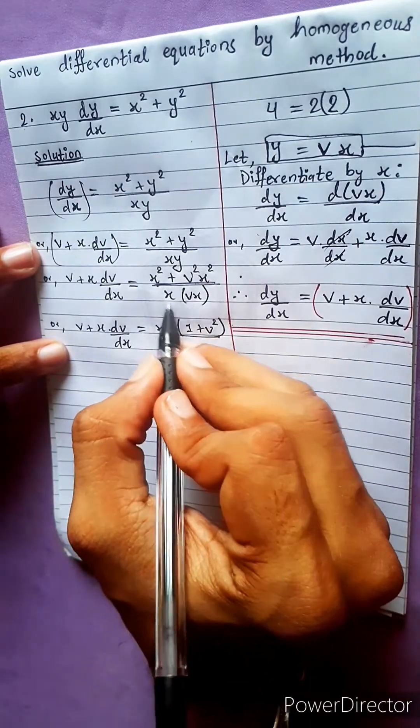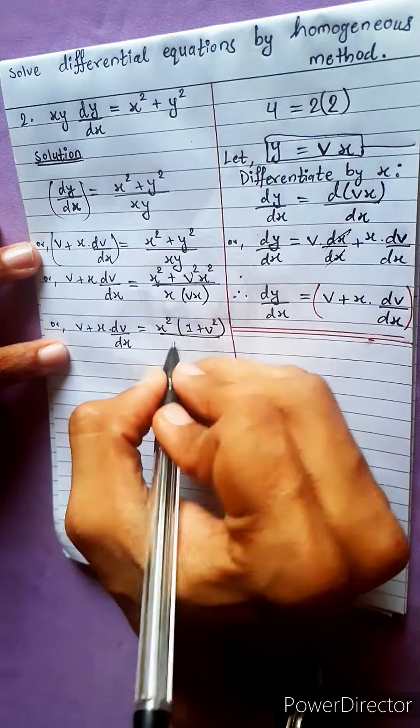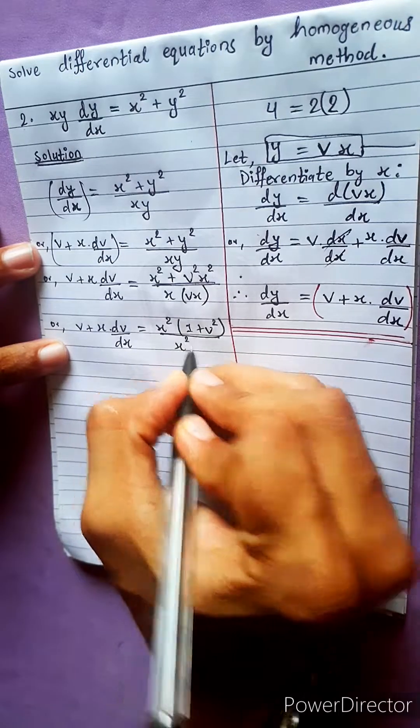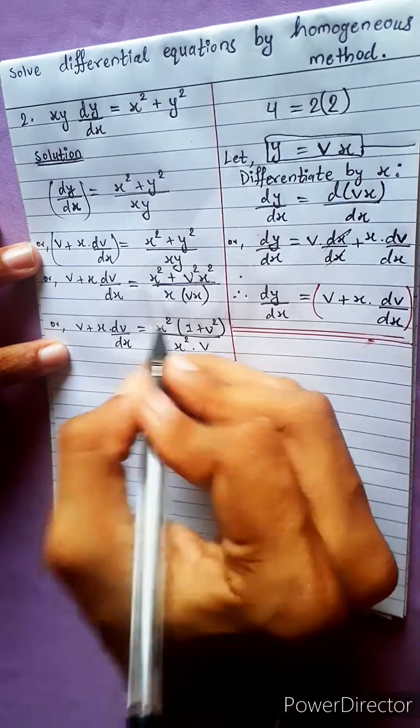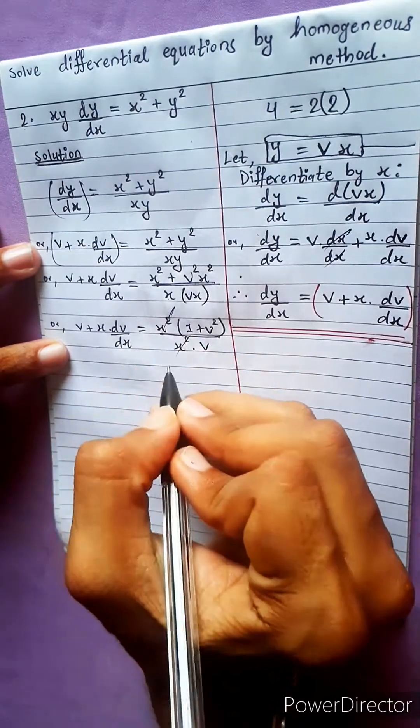v plus x dv by dx equals to x square common 1 plus v square, remaining term divided. Then x square into v, x square cancel.